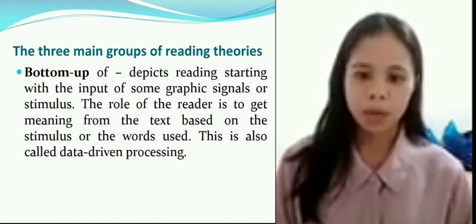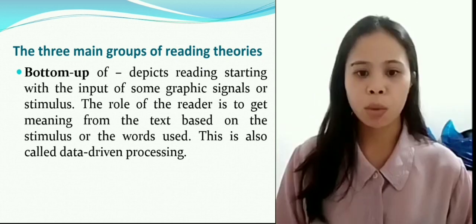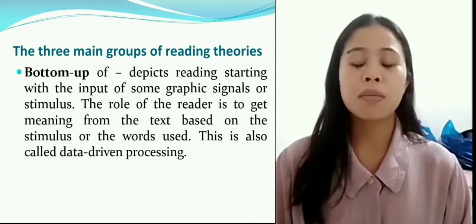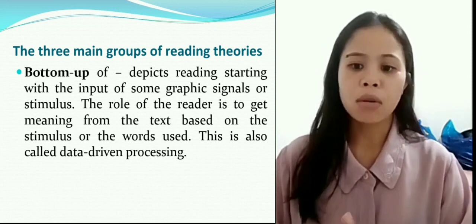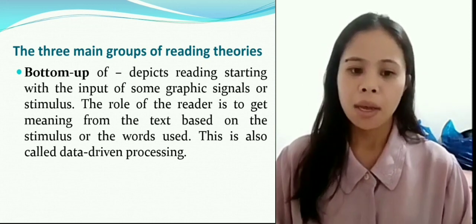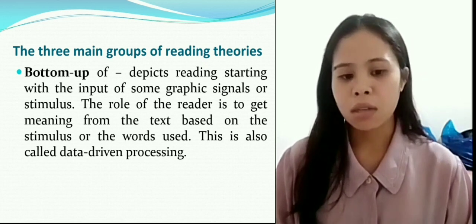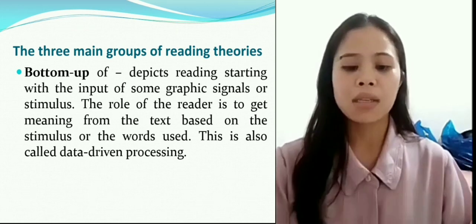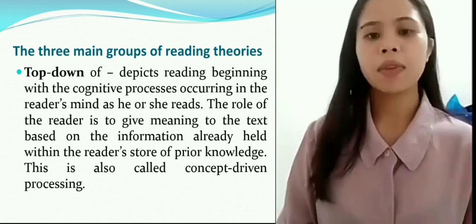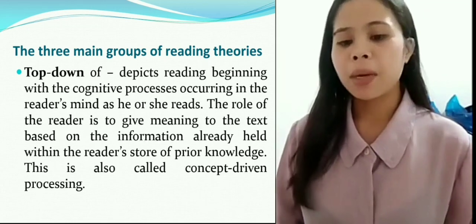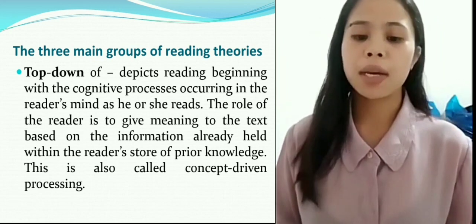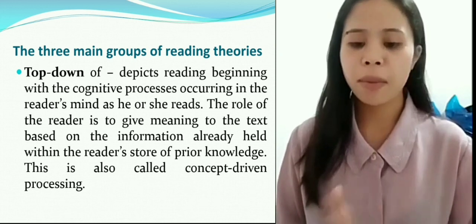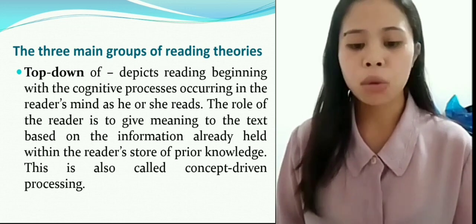Bottom-up depicts reading starting with the input of some graphic signals or stimulus. The role of the reader is to get meaning from the text based on the stimulus or the words used. This is also called data-driven processing, meaning the reader understands the text with what is firstly detected with their senses, beginning at the entry level. Next is top-down, which depends on reading beginning with the cognitive process occurring in the reader's mind as he or she reads. The role of the reader is to give meaning to the text based on information already held in the reader's store of prior knowledge.